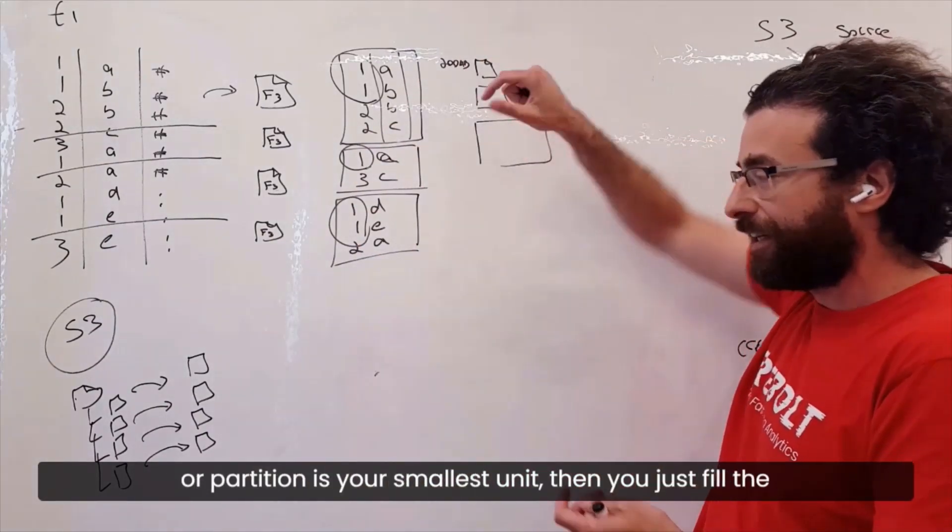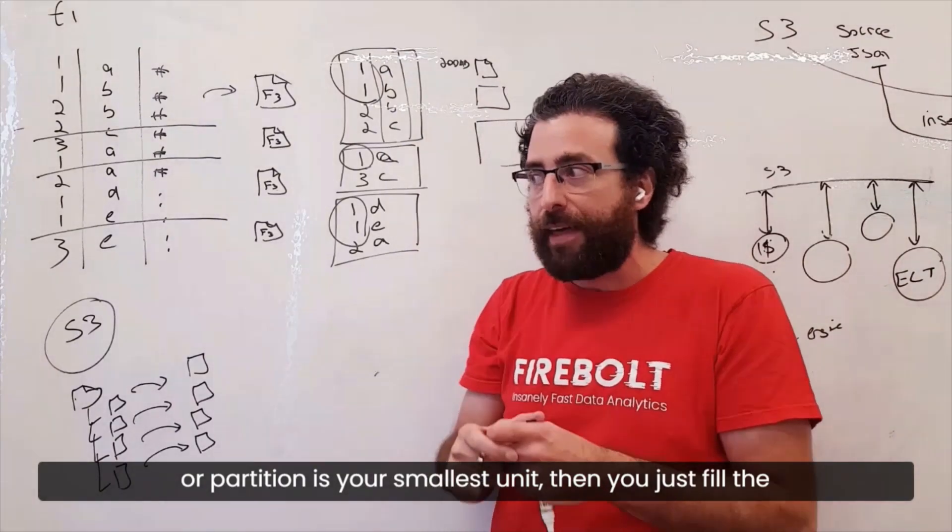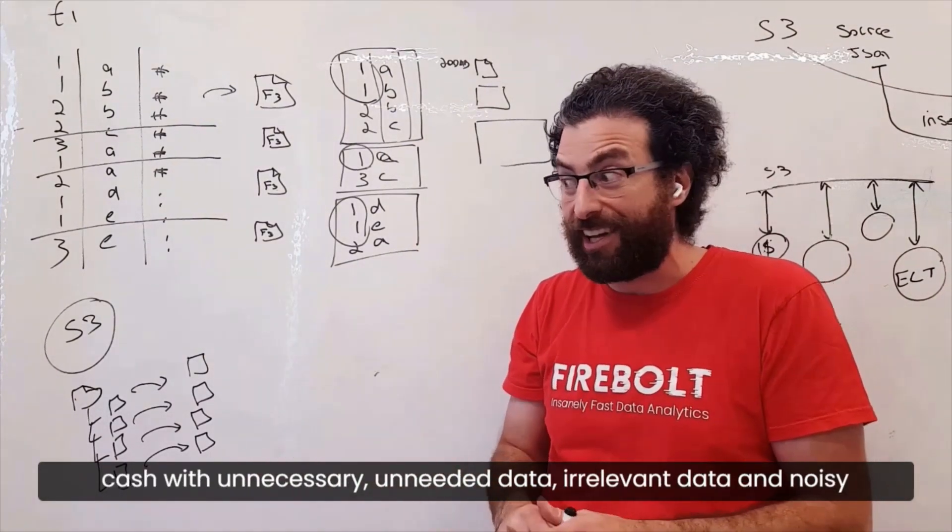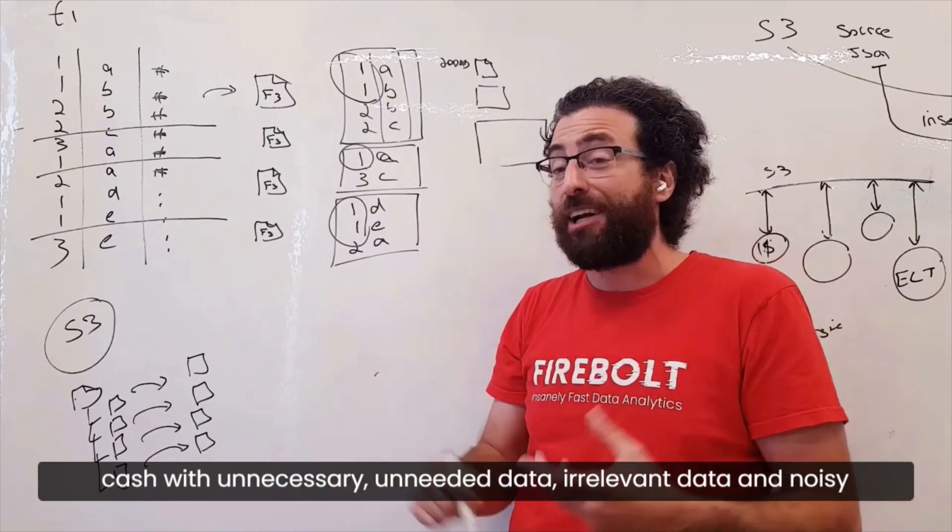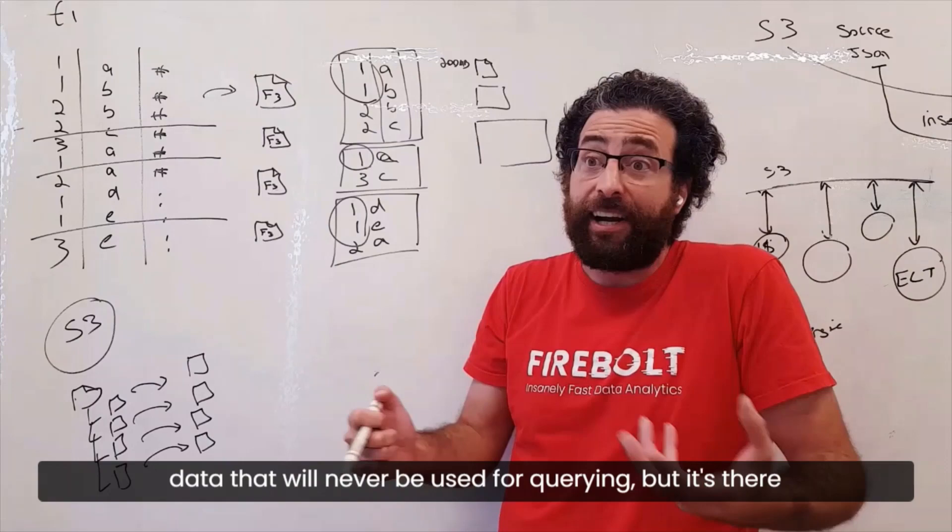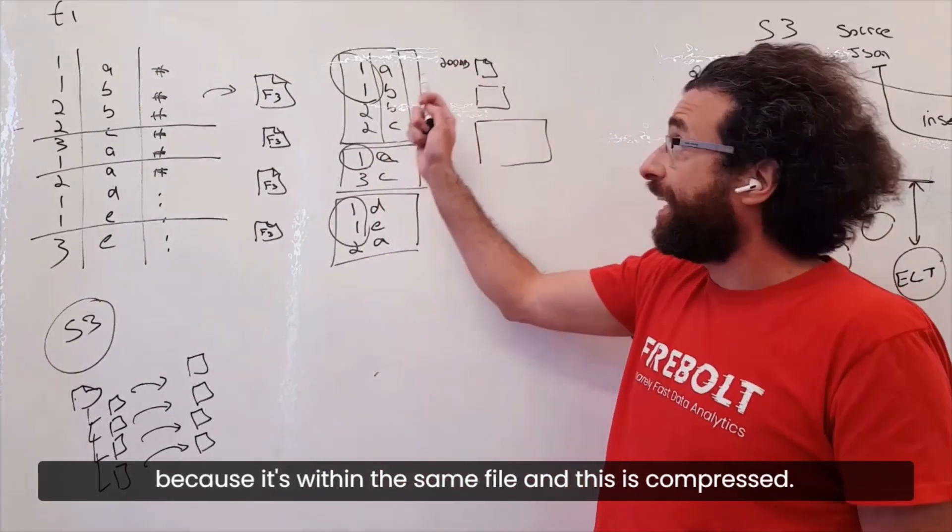It has to do with the fact that if a file or a micropartition or a partition is your smallest unit, then you just fill the cache with unneeded data, irrelevant data, noisy data that will never be used for querying. But it's there because it's within the same file. And this is compressed.